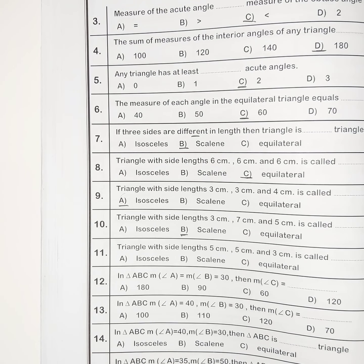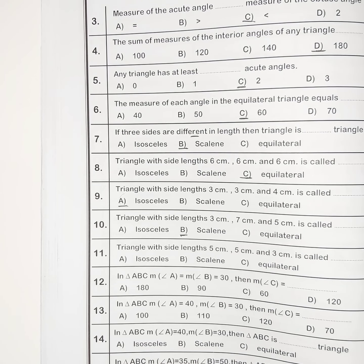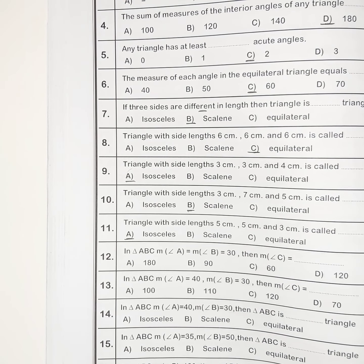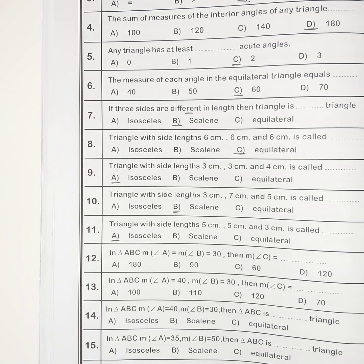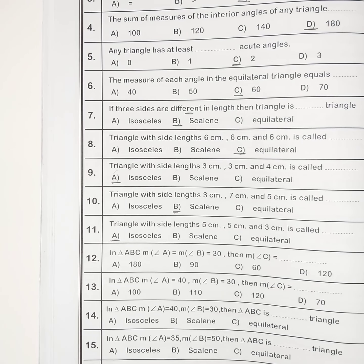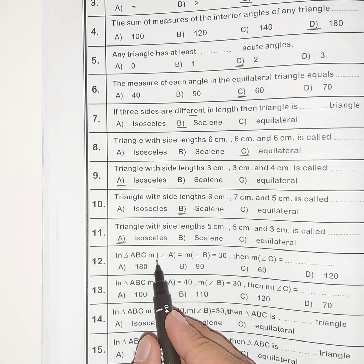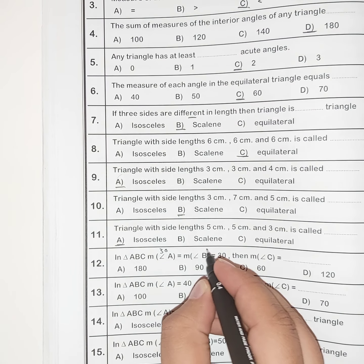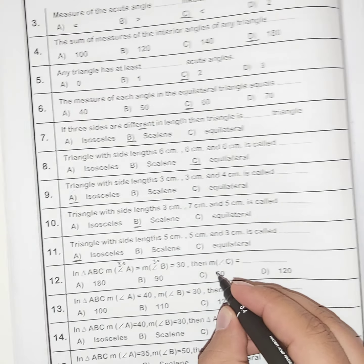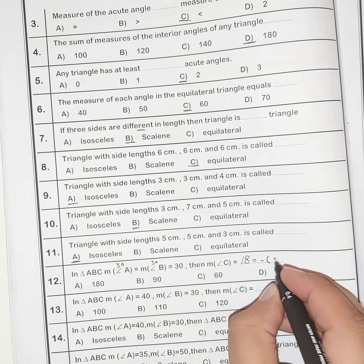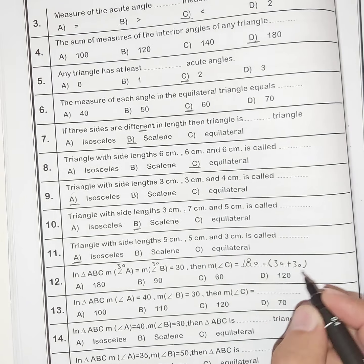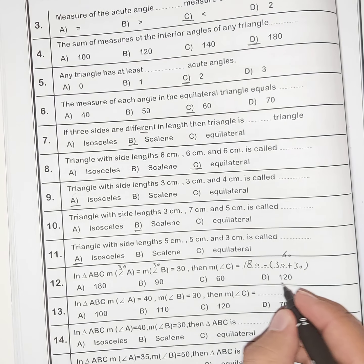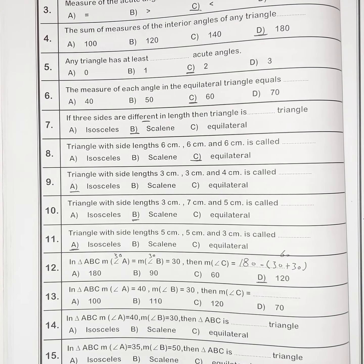Number eleven: a triangle with side lengths 5 cm, 5 cm, and 3 cm is called an isosceles triangle. Number twelve: in triangle ABC, the measure of angle A equals the measure of angle B equals 30 degrees. The sum of interior angles equals 180 degrees, so angle C equals 180 minus (30 plus 30) = 180 minus 60 = 120 degrees.